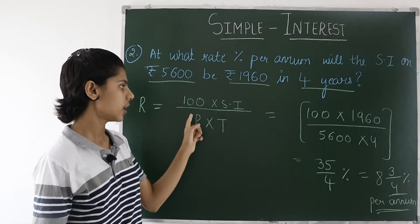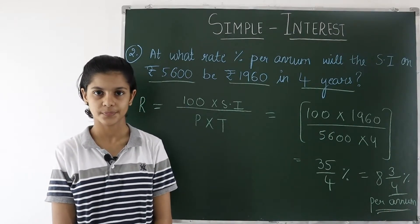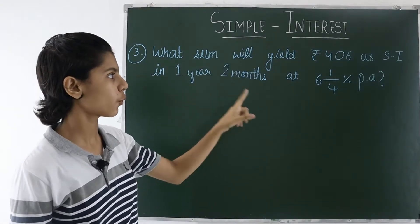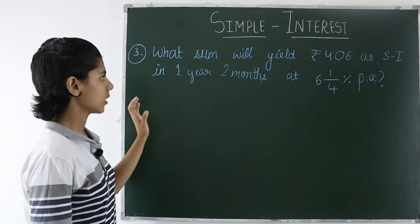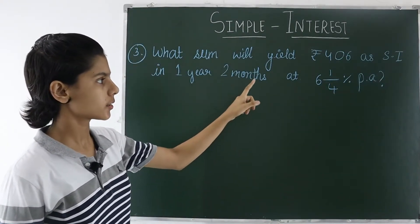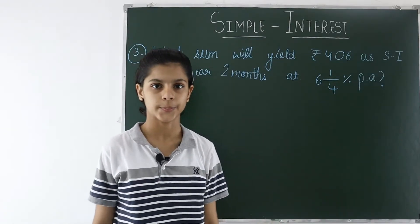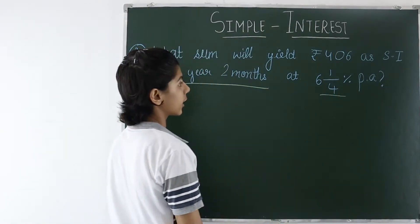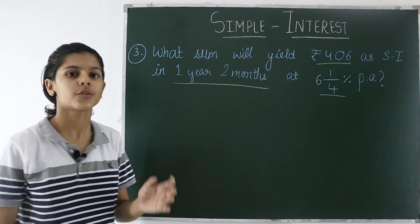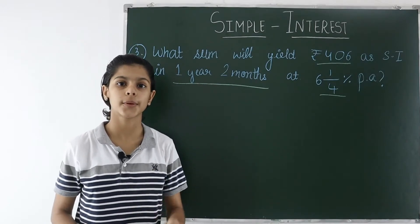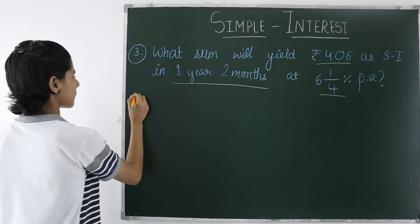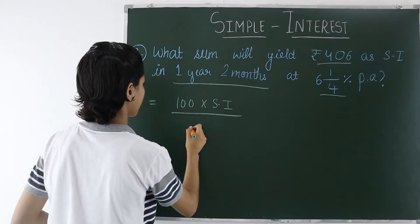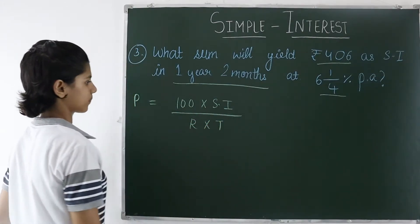The next question is: What sum will yield ₹406 as simple interest in one year two months at 6¼ percent per annum? In this question we have the time, rate, and simple interest — we have to calculate the sum or principal. The formula for principal is: P = (100 × SI) ÷ (R × T).